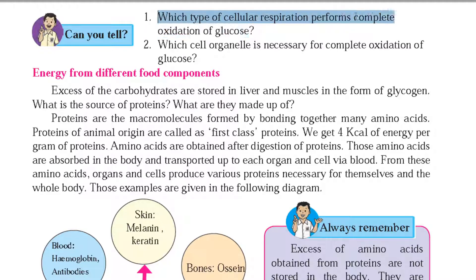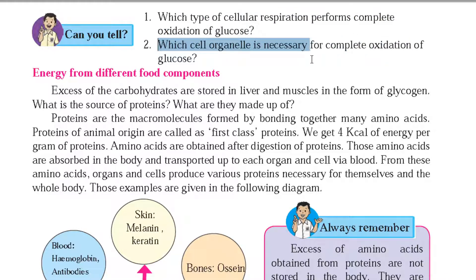Can you recall: which type of cellular respiration performs complete oxidation of glucose? The answer is aerobic respiration. Second question: which cell organelle is necessary for complete oxidation of glucose? The answer is mitochondria — the cell organelle necessary for energy production.